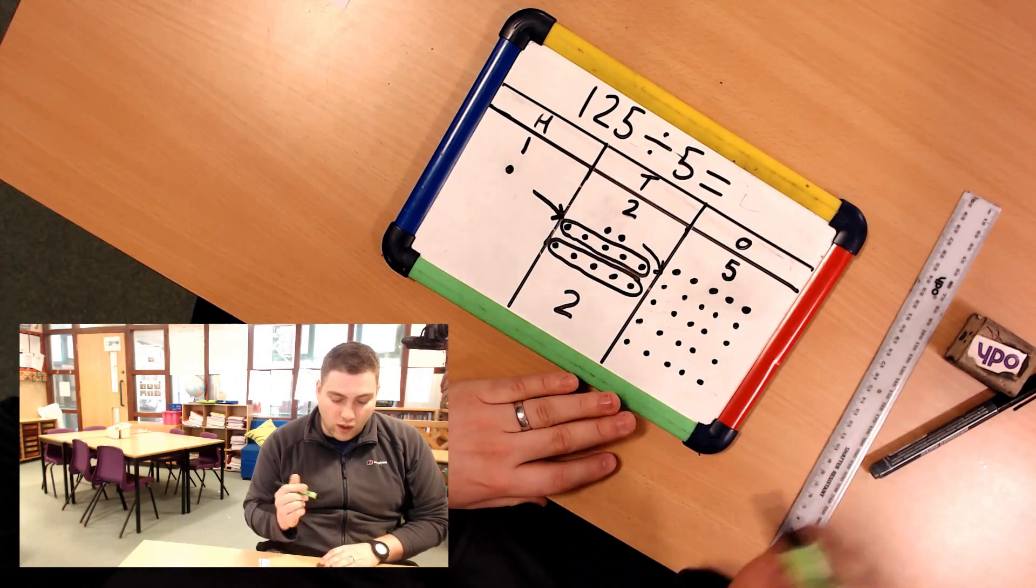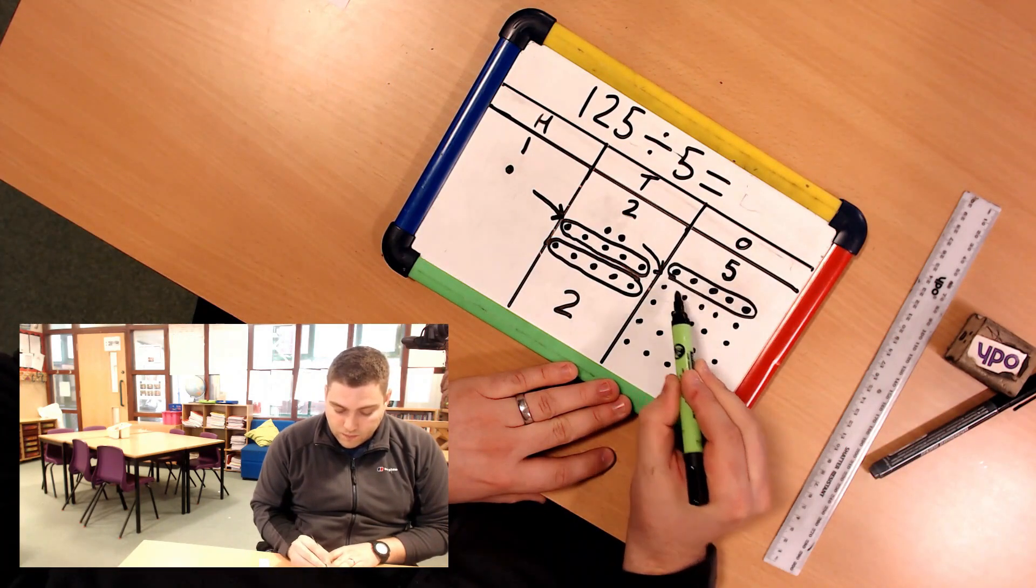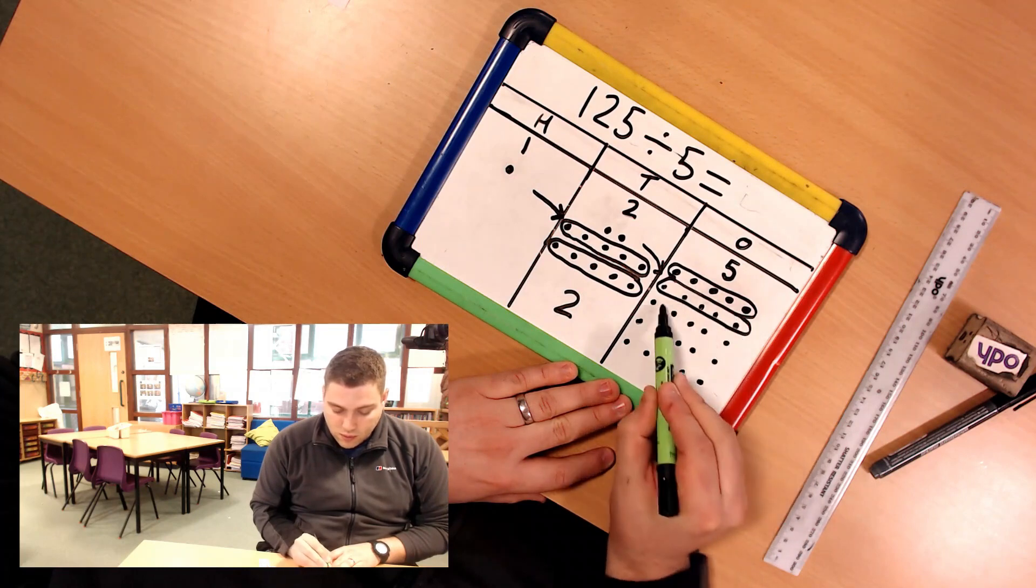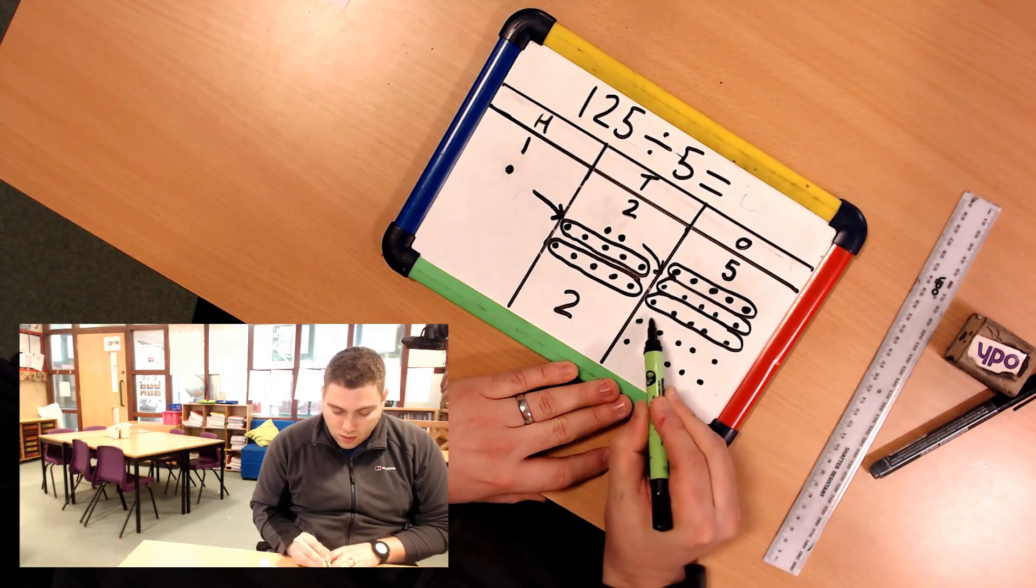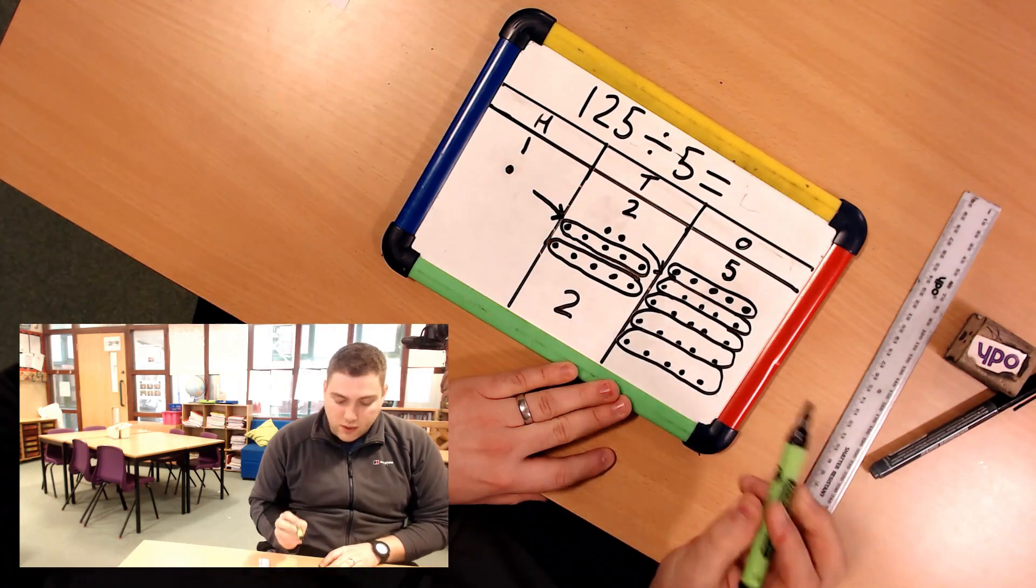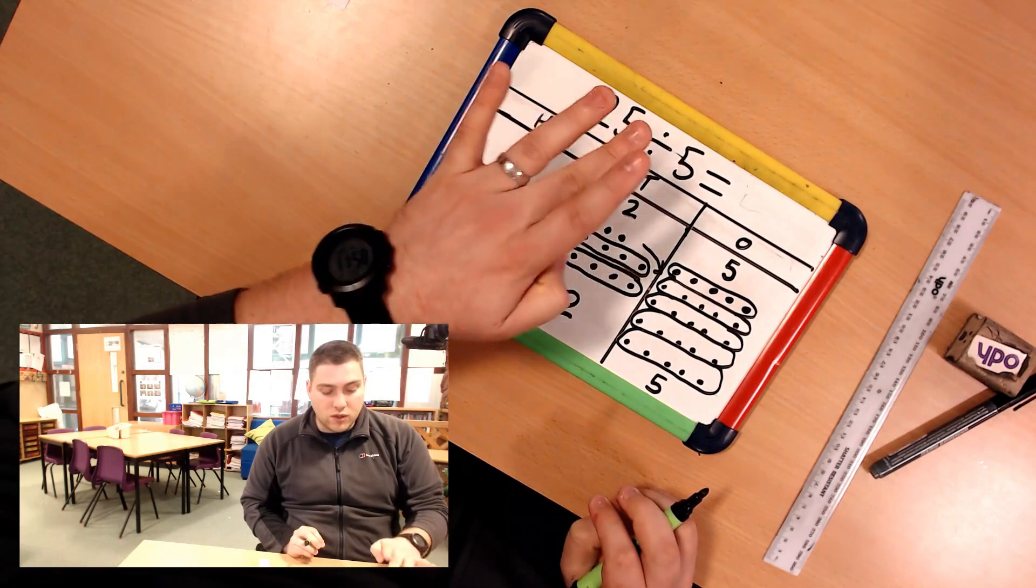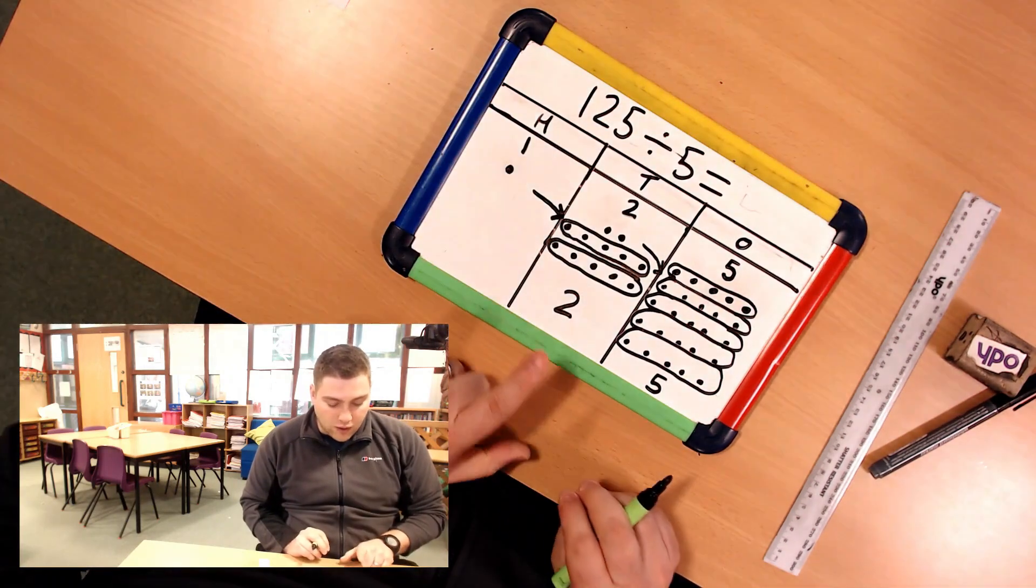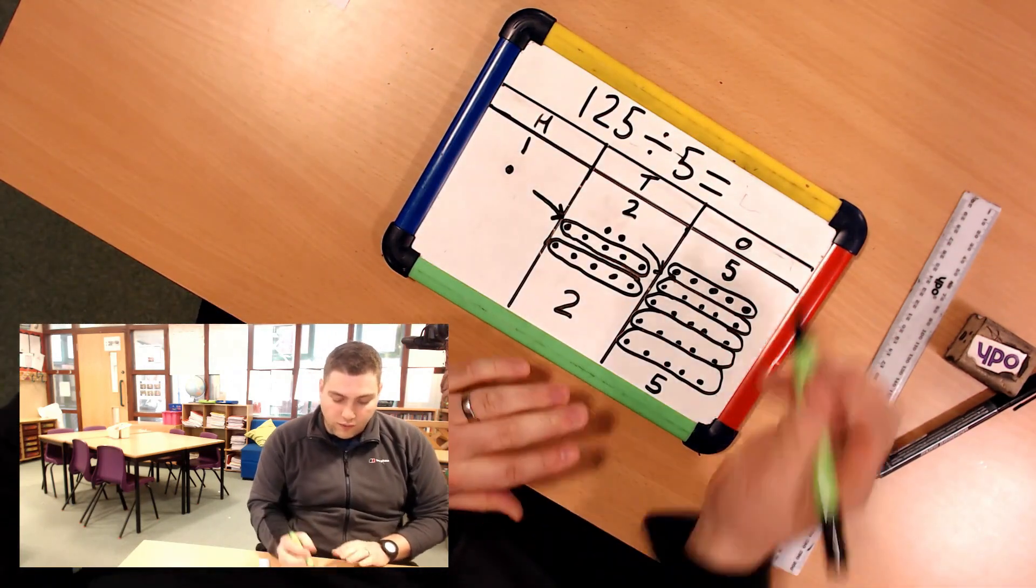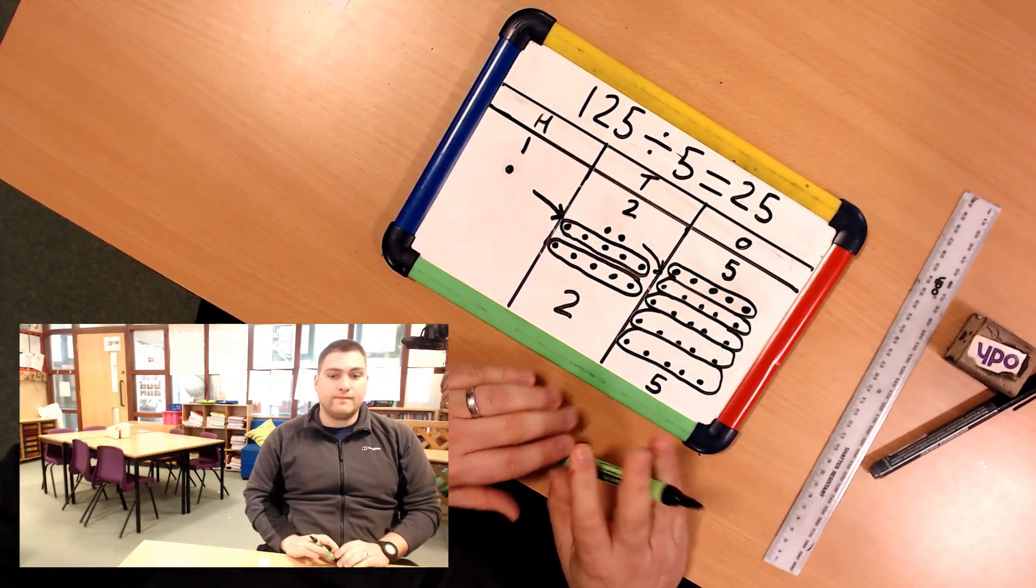I now need to make 5 equal groups of 5 hopefully. 1, 2, 3, 4, and 5. So now I've got 5 equal groups in my 1s. So 125 divided by 5 is 25. There we go.